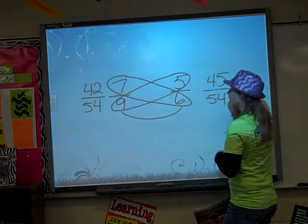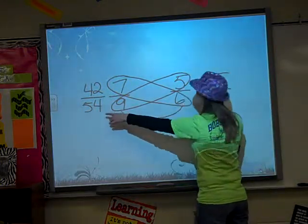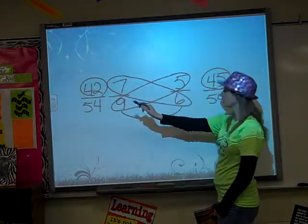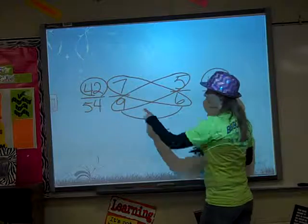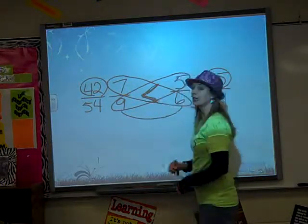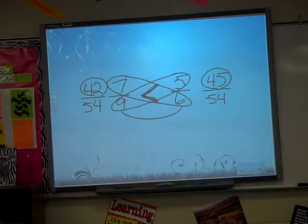See how close these are when we really see them as a common denominator? I know the pieces are the same size, so I can look at my numerators, and 45 is greater than 42, so 5 sixths is greater than 7 ninths, and always put that symbol there. Good luck in comparing fractions! Thanks.